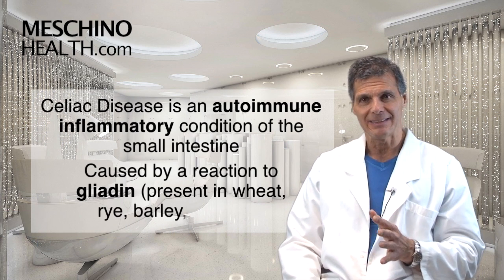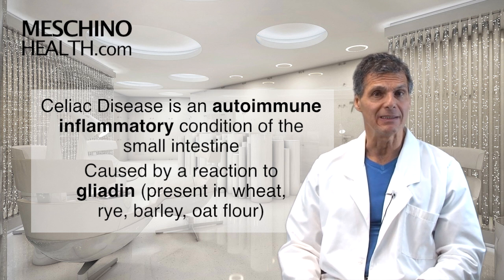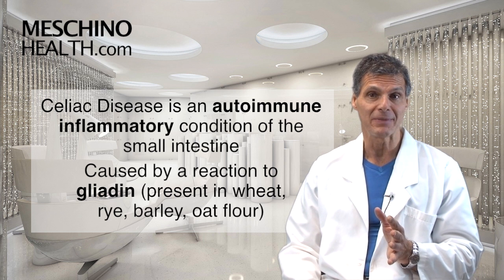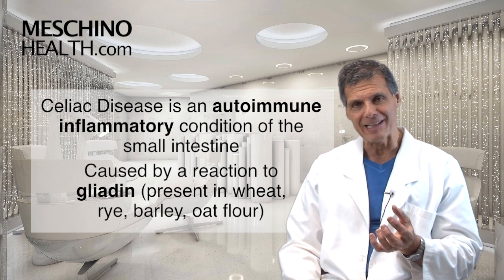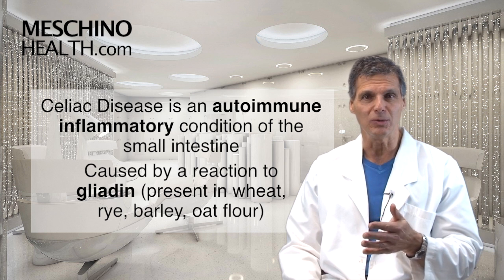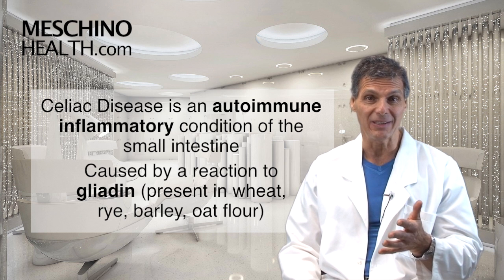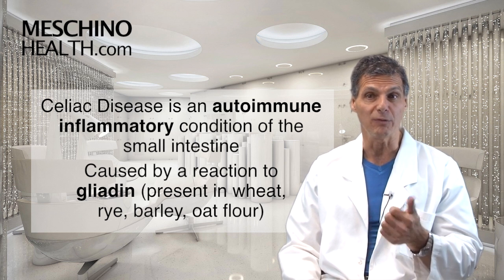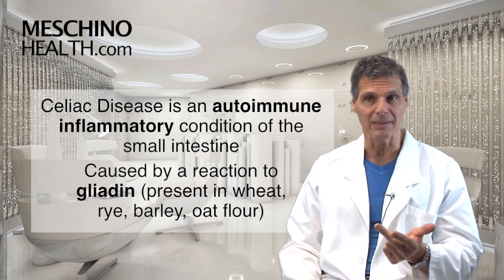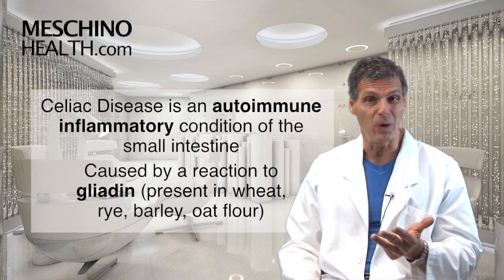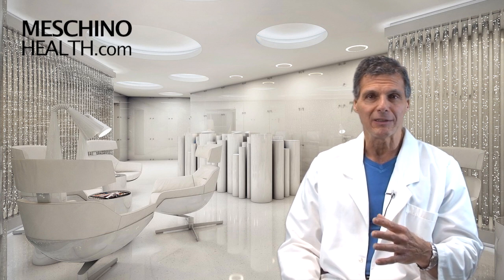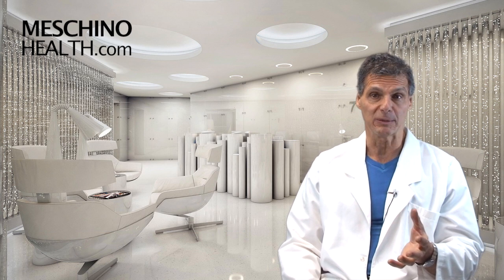Celiac disease is an autoimmune inflammatory condition of the small intestine. It's caused by a reaction to gliadin. Gliadin is a polypeptide component of wheat, rye, barley, and also oat flour. When you ingest it, it triggers this immune response.